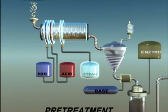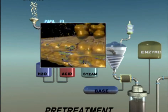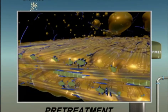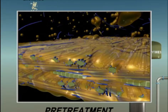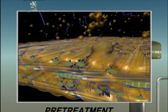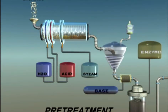Steam or water, sometimes in the presence of chemicals, is used to break down the biomass into cellulose, hemicellulose, and lignin. In one possible approach, acid is used for pre-treatment.